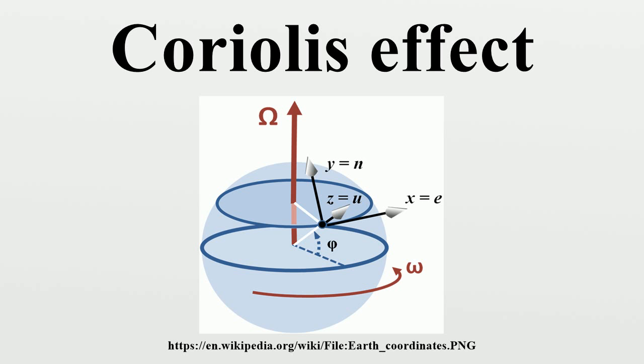Such motions are constrained by the surface of the Earth, so only the horizontal component of the Coriolis force is generally important. This force causes moving objects on the surface of the Earth to be deflected to the right in the northern hemisphere and to the left in the southern hemisphere. The horizontal deflection effect is greater near the poles and smallest at the equator.